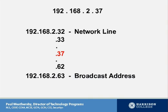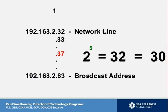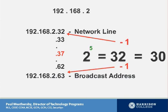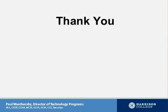The maximum number of hosts for this segment is 30: 2 to the power of 5 equals 32, but we subtract one address for the network line and one for the broadcast. The total number of networks in this scheme is 8 — 2 to the power of 3 — beginning at 192.168.2.0, then 2.32, 2.64, and so on. Thank you for watching this tutorial on VLSM.